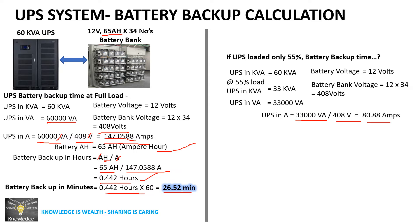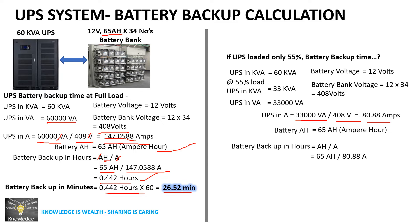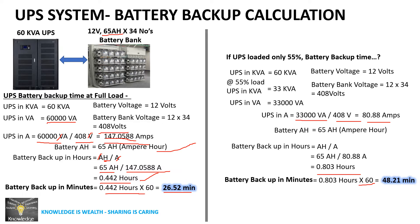To calculate the current at 55% load: 33,000 volt-ampere divided by 408 volts equals 80.88 amperes. Battery backup in hours: 65 Ah divided by 80.88 amperes = 0.803 hours. Multiplying by 60 gives 48 minutes. So the 60 kVA UPS working at 55% load, connected to the 65 Ah, 34-battery bank, will give around 48 minutes of battery backup.